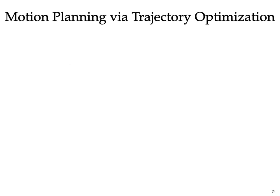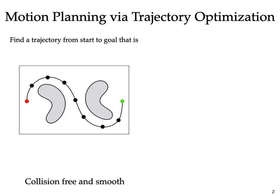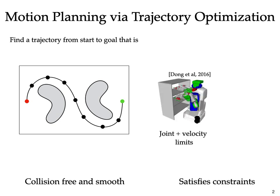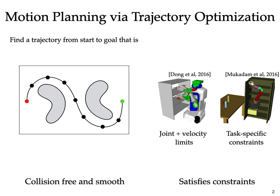Trajectory optimization aims at solving the problem of generating a robot trajectory from a start to a goal configuration that is smooth, collision-free, and satisfies user-defined constraints such as joint limits, velocity limits, and other task-specific constraints like maintaining contact or orientation of objects.